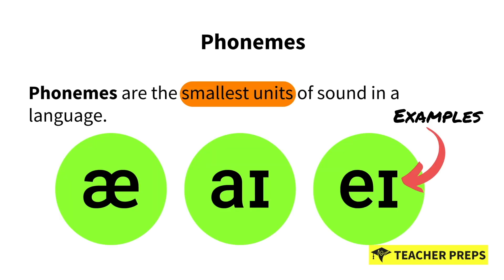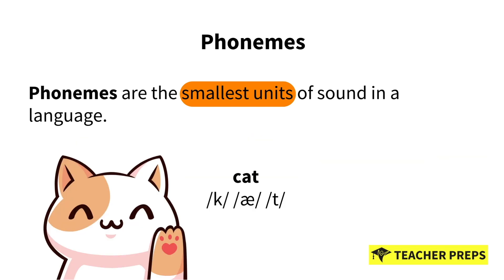Next, we have phonemes, which are the smallest units of sound in a language. Think about phonemes as the building blocks of words, similar to how individual Lego blocks combine to form one structure. For example, the word 'cat' consists of three phonemes: /k/, /a/, and /t/.